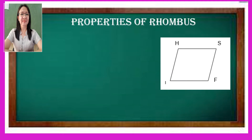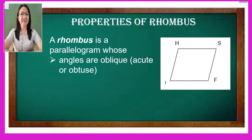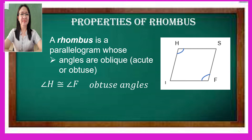Another property of rhombus is that it is a kind of parallelogram whose angles are oblique — they can be acute or obtuse. So angle H is congruent to angle F; these are pairs of obtuse angles. Then angle I is congruent to angle S, and these are pairs of acute angles.